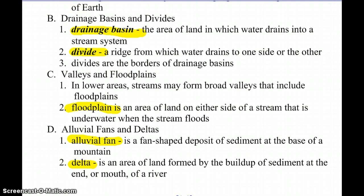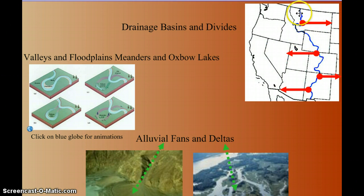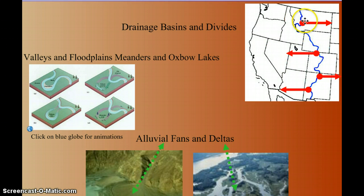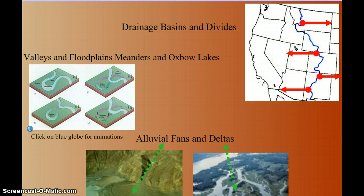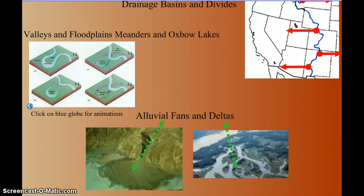You've probably talked about the Nile delta in social studies. Here's a picture of a divide through the Rocky Mountains. This blue line shows the divide — anything to the right flows toward the Mississippi River, and everything to the left flows toward either the Pacific Ocean, the Colorado River, or in that general direction.